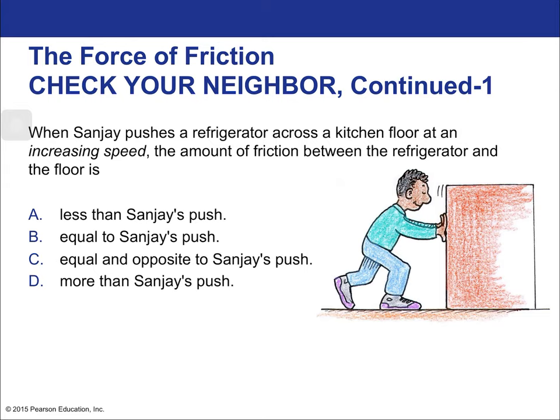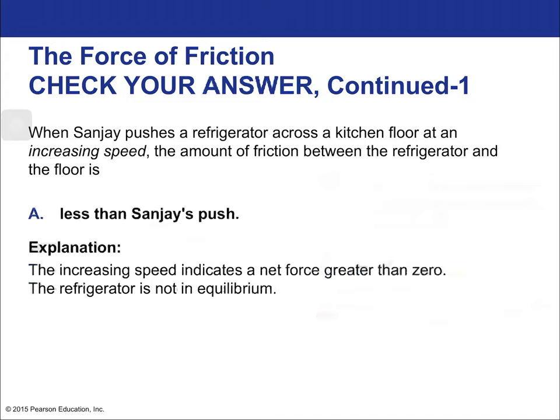When Sanjay pushes the refrigerator at an increasing speed — that's code for acceleration — the friction force must be less than his pushing force. Only then is there a net force in the direction of motion, causing the object to speed up. If friction were greater than his push and the object was already in motion, it would actually be decelerating.